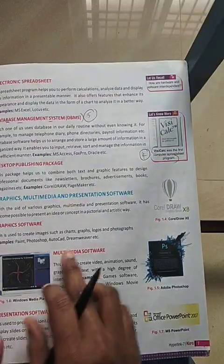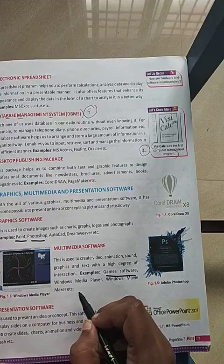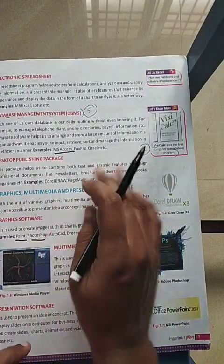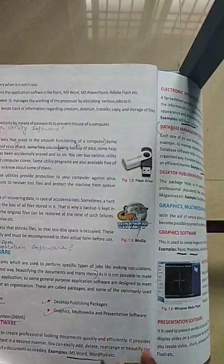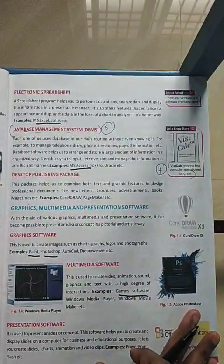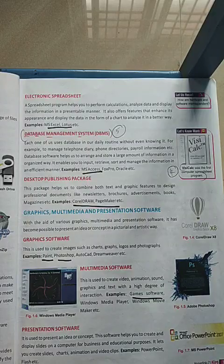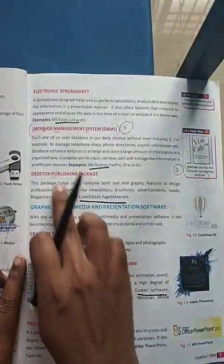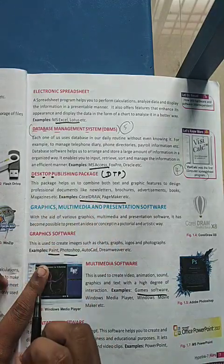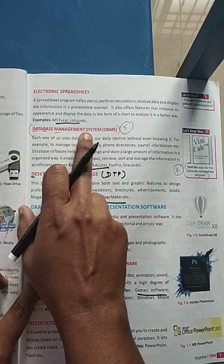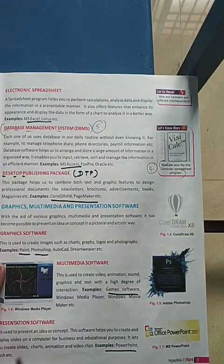Apart from this, you should know examples for graphic software — Paint, Photoshop — as these can be asked in match-the-following. Also know examples for database software, spreadsheet software, and word processing software like Microsoft Word. For desktop publishing package (DDP), know CorelDraw, PageMaker, etc. DDP expansion is Desktop Publishing. For presentation software, know PowerPoint, Flash, etc.